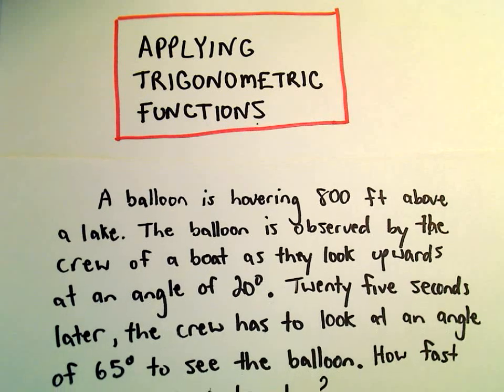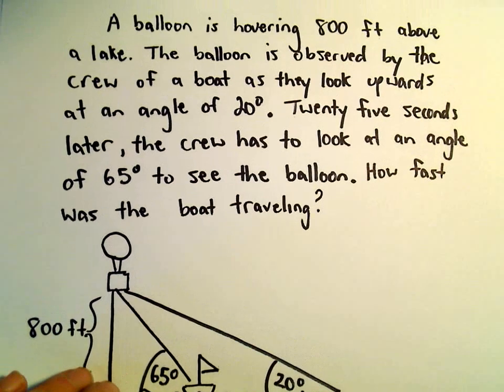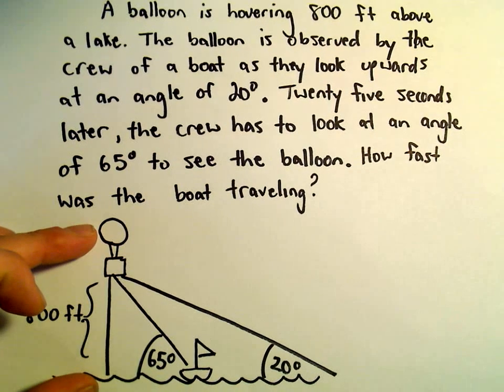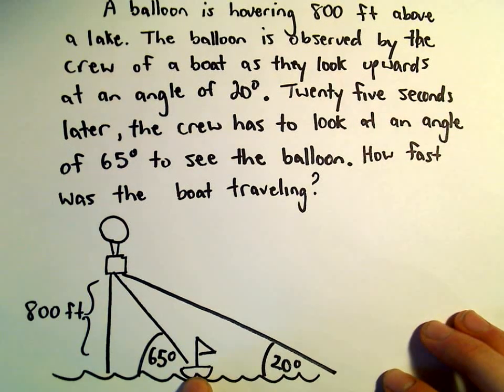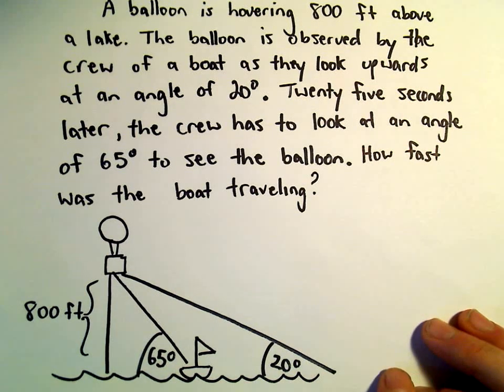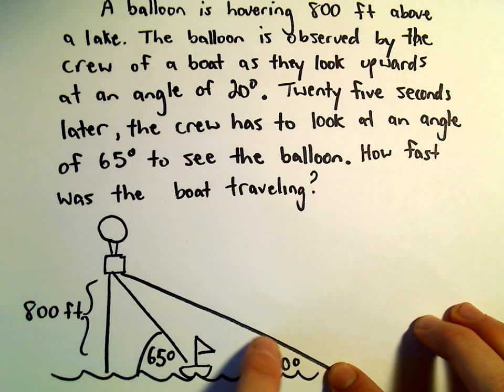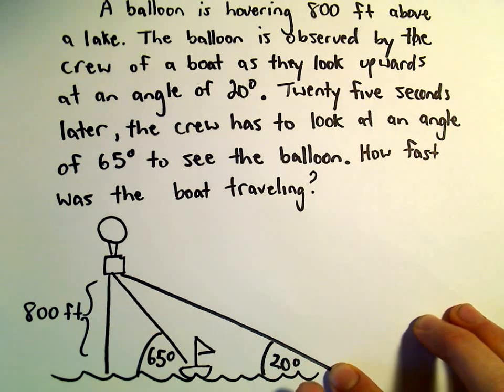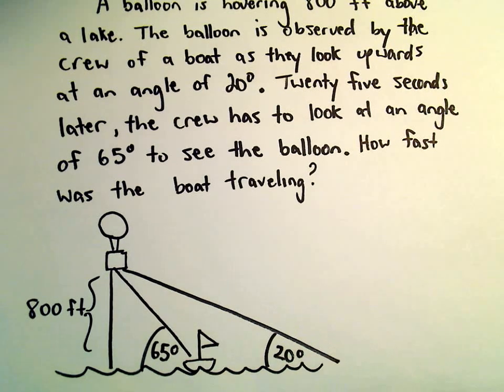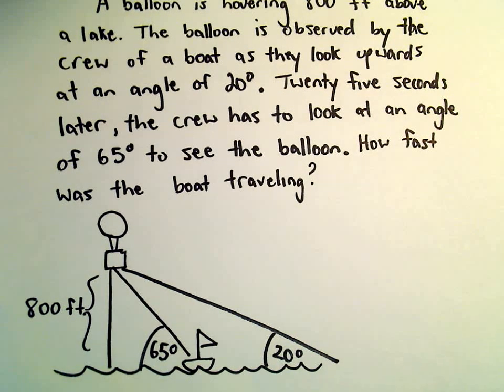Just one more example here of using trig functions in a word problem. Suppose we've got a balloon hovering 800 feet above a lake, and we've got a crew on a boat, maybe moving here right to left. Suppose they look upwards at an angle of 20 degrees initially and they're able to see the balloon. Then 25 seconds later, the crew actually has to look up at an angle of 65 degrees to see the balloon. We want to figure out how fast this boat is traveling.